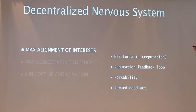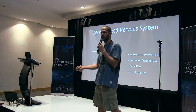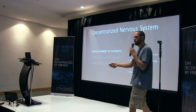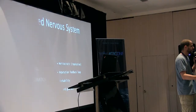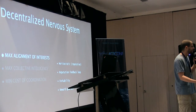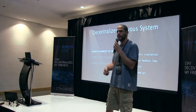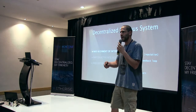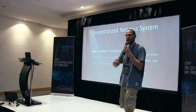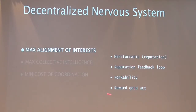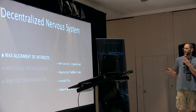What do we mean by maximum alignment of interest? We want to have a meritocratic system so that those who can get better answers have more power to influence the system. We want some sort of reputation for the group — those who perform well under a certain value system get more reputation and thus more power. We also want forkability: if you are not aligned with the value system you're acting in, you need to be able to fork to another value system, creating diversification of aligned value systems. And finally, you want to reward accordingly — that will create maximum alignment of interest.